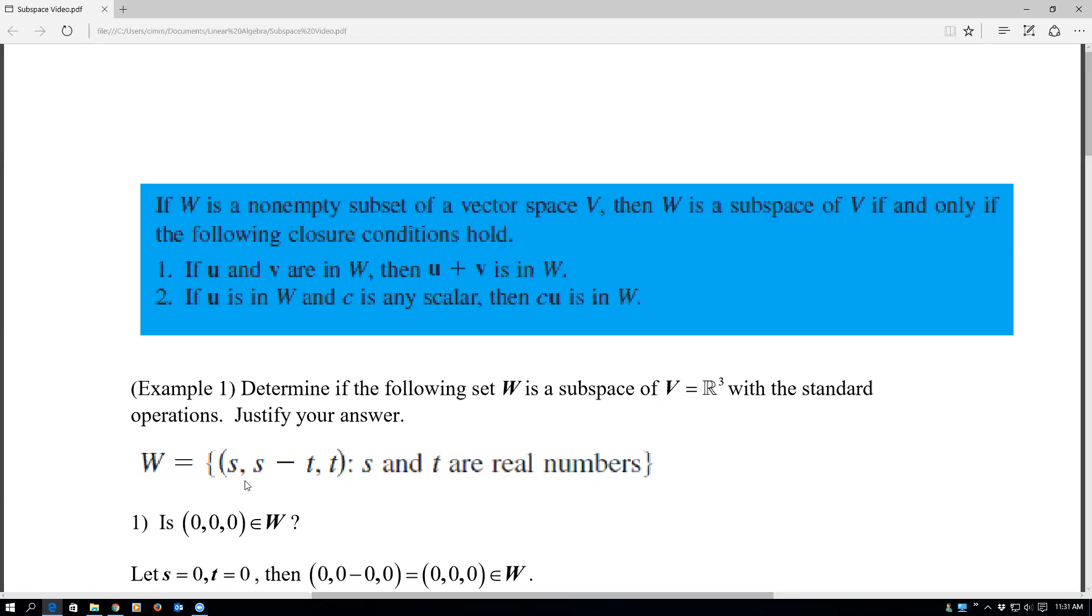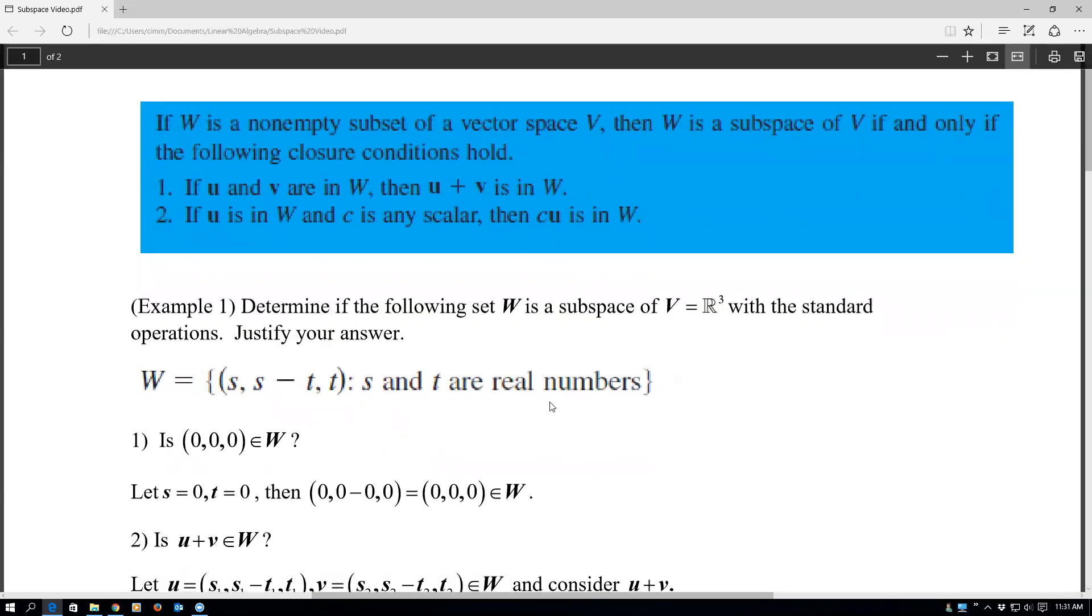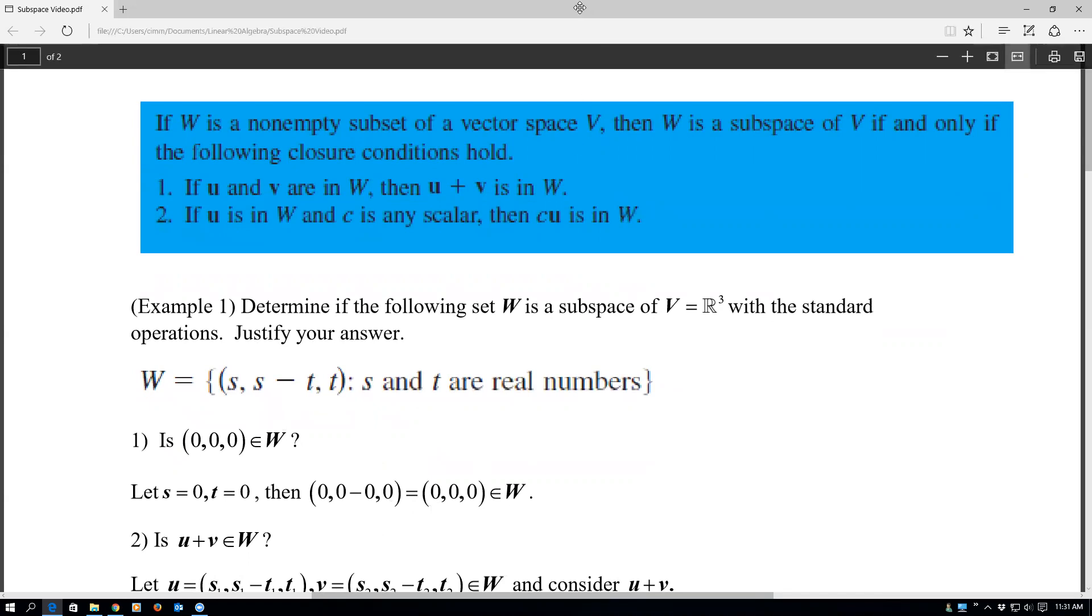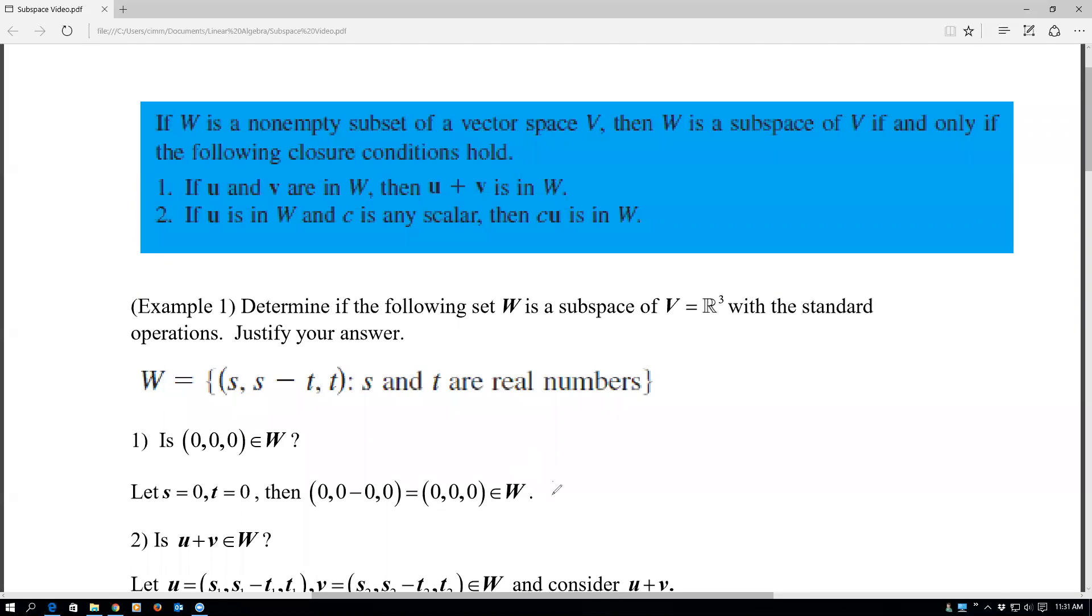Well, it is, because if you let S and T both equal zero, and we have control because S and T are real numbers, then (0, 0, 0) is of that form, and it's in W. So this does have the zero vector in there. So we can sort of check that off in our list and say, yep, (0, 0, 0) is in there.